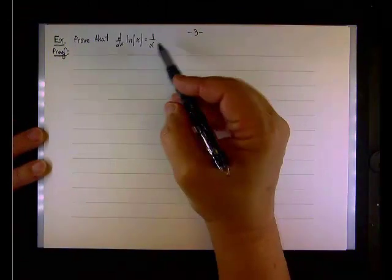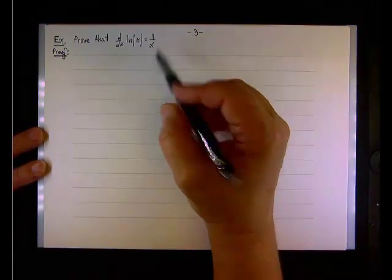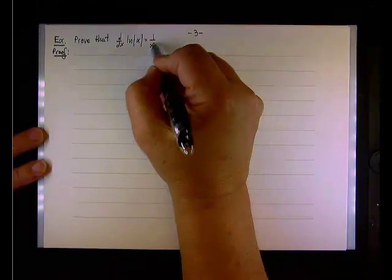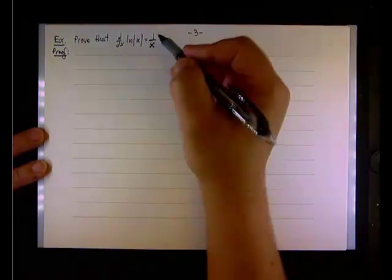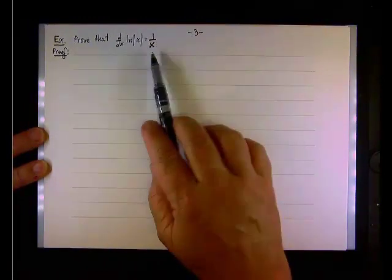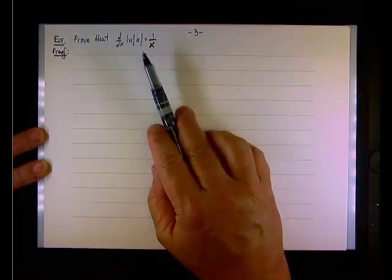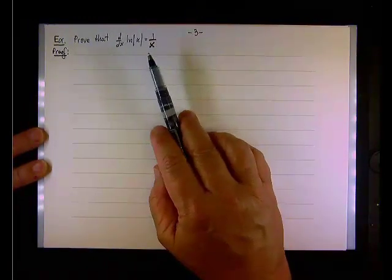This property will be useful in the next course, in Calc 2, when you focus on differentiation, because when you have a function 1 over x, x can be either a positive number or a negative number. Of course, x cannot be equal to 0.